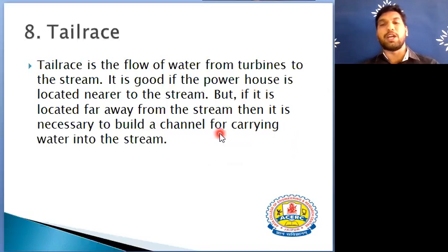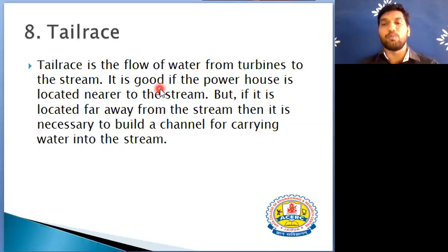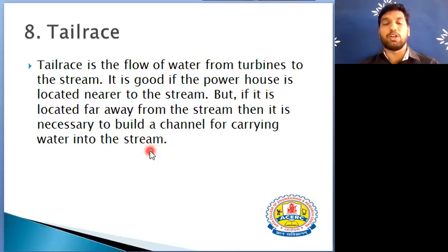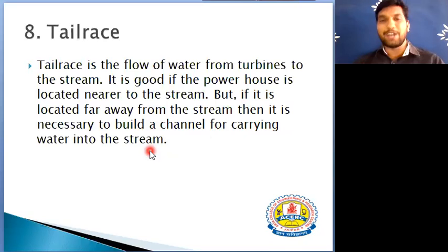The tailrace is basically the downstream portion of a hydroelectric power plant where water flows from the turbine back to the stream. The water coming out of the turbine is discharged into the tailrace, from where it can be mixed back into the original water stream or diverted into another channel. If the powerhouse is located far away from the stream, it is necessary to build a channel to carry the water back to the stream. This concludes all the major components of a hydroelectric power plant.